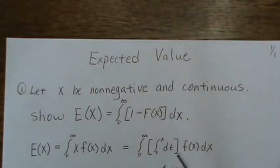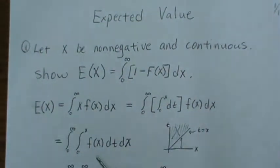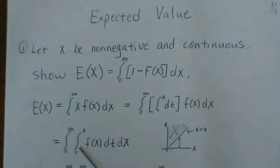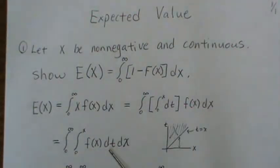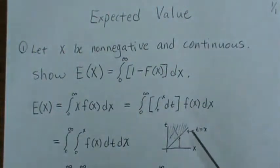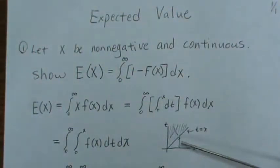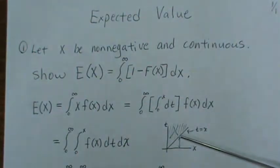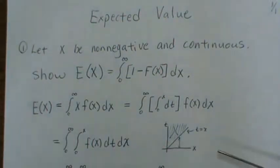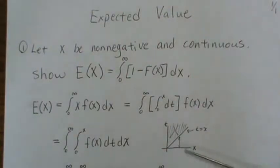We take away those brackets and now have a double integral. We're integrating over t first, then x. Looking at the region in x and t: t goes from 0 to x, and x goes from 0 to infinity — that's the region we're integrating over.